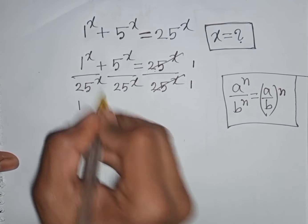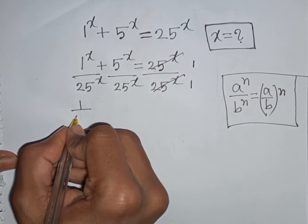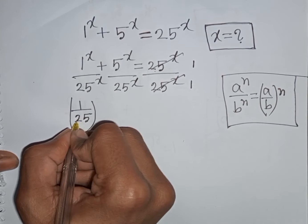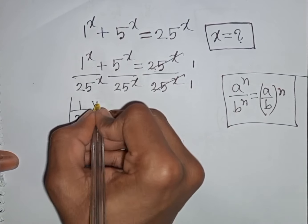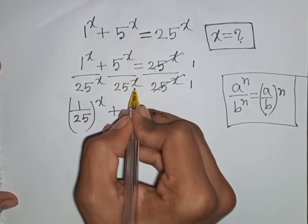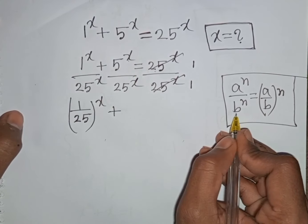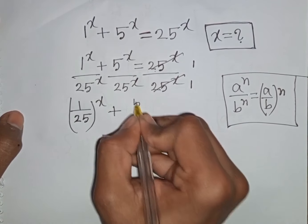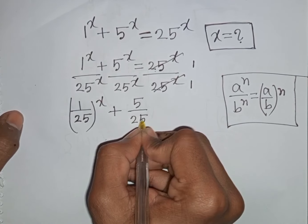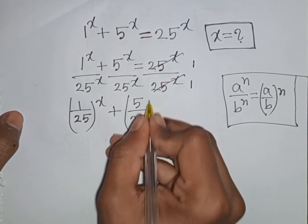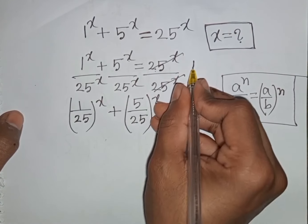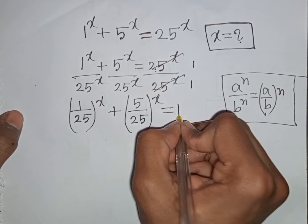So according to this formula we can write (5/25)^x plus (5/25)^x. And 25^x divided by 25^x gives 1.